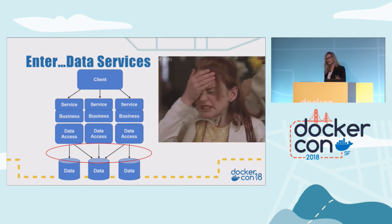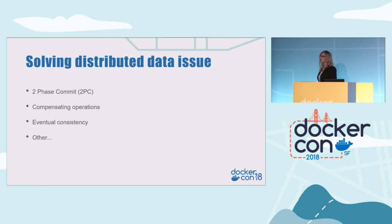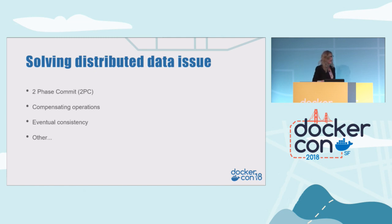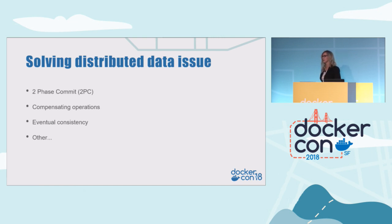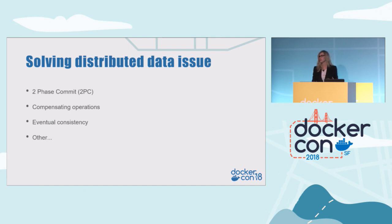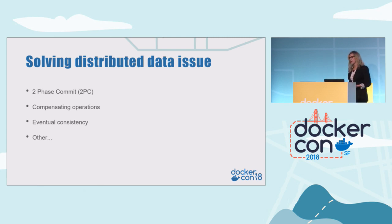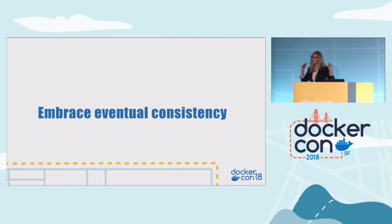I tell you this story because it resonates with microservices today — we still have to deal with, and even more so, this distributed data problem. There isn't one magical solution. Some areas require ACID transactions and others can live with eventual consistency. Two-phase commit is difficult over services, there are compensating operations, and then of course eventual consistency. Let's just say it together: embrace eventual consistency.